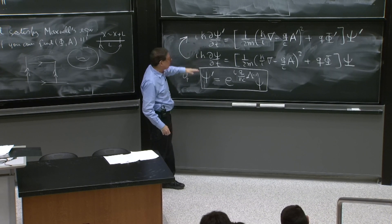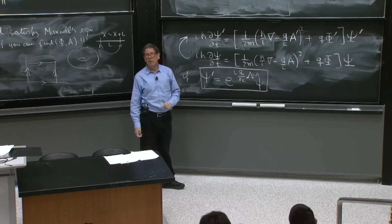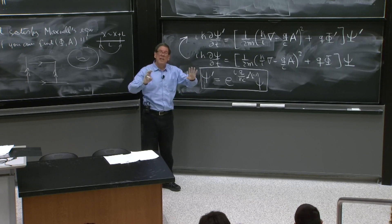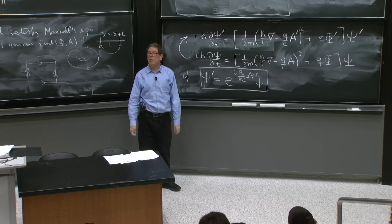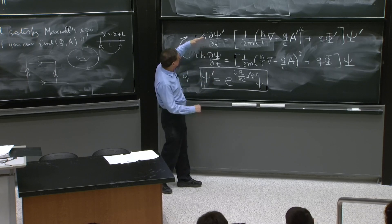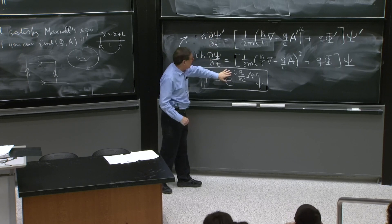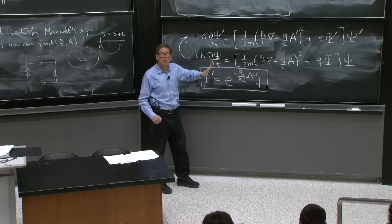So you now have the technical problem of first checking that this is true. This is the statement of gauge invariance of the Schrödinger equation. There is a way to transform the wave function so that the new Schrödinger equation solution is obtained from the old Schrödinger equation solution.